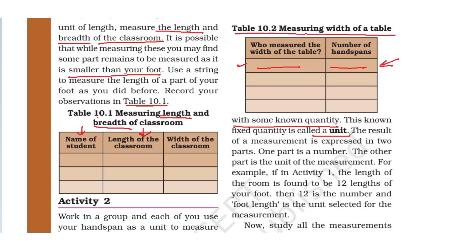The result of a measurement is expressed in two parts: one part is a number, and the other part is the unit of measurement. For example, if in Activity 1 the length of the room is found to be 12 foot-lengths, then 12 is the number and 'foot length' is the unit selected for the measurement. This is how we derive a measuring unit.